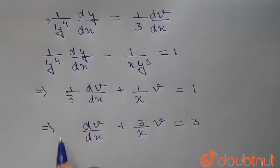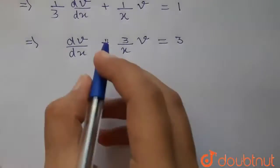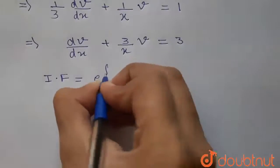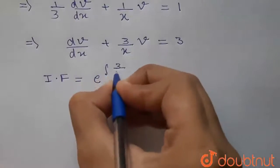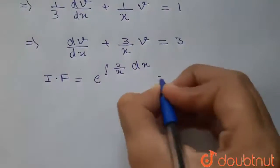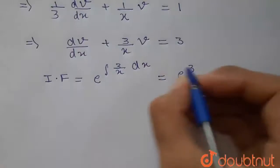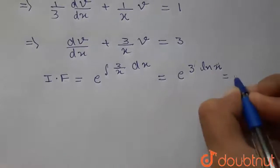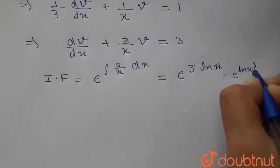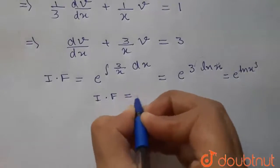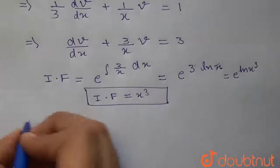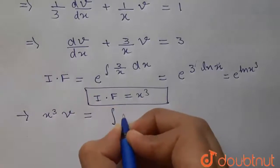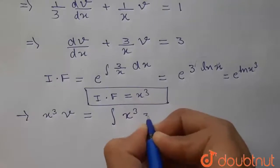This is a standard linear differential equation. We can find its integrating factor, which equals e to the power of the integral of p, where p is 3 by x. The integral of 3 by x dx equals 3 ln x, so the integrating factor is e to the power ln x cubed, which equals x cubed. Our equation becomes x cubed times v equals the integral of x cubed times 3 dx.